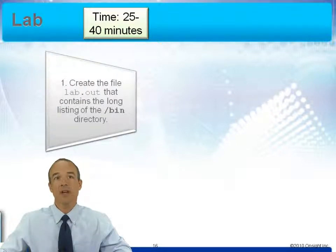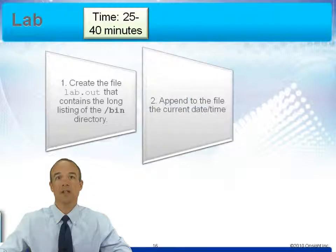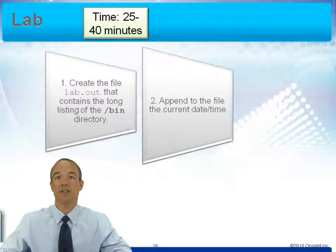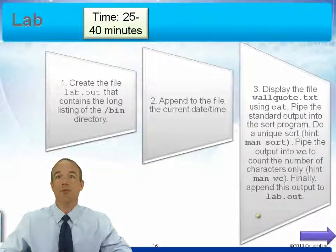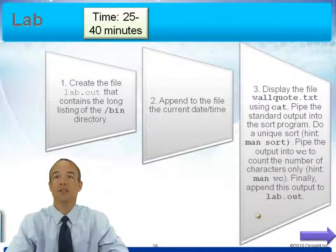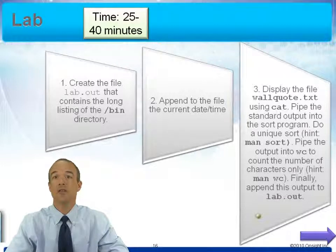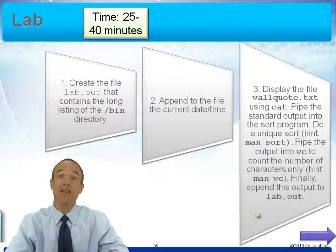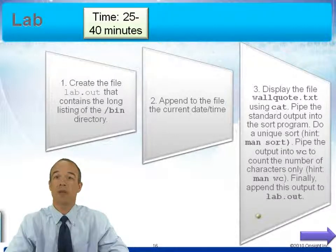It's time for the lab — about 25 to 40 minutes depending on your pace. Step one: create the file lab.out containing the long listing of the /bin directory. Step two: append the current date and time to lab.out — make sure it's appended, not overwritten. Step three: display the file wall.txt using cat, pipe the output into sort, do a unique sort (hint: man sort), then pipe into WC to count characters only (check man wc). Finally, append the output to lab.out.